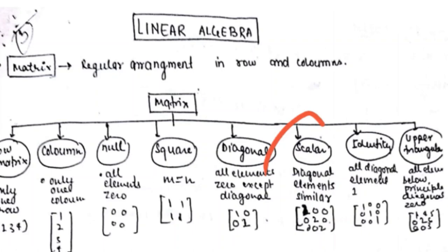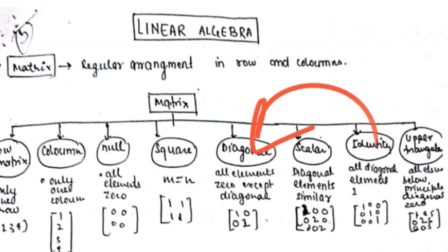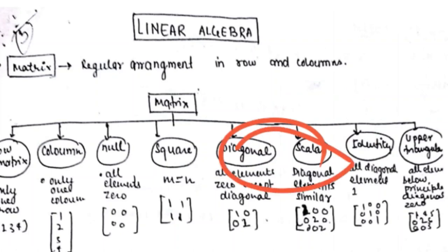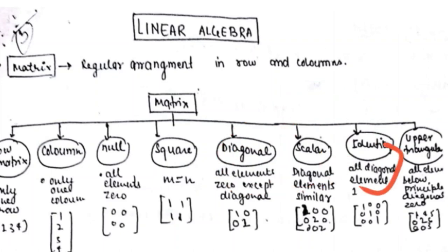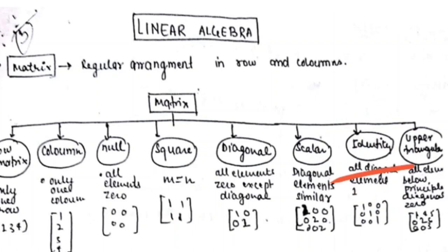An identity matrix is another modification of the diagonal matrix in which all the diagonal elements are one. The difference between a diagonal matrix and an identity matrix is that in the identity matrix, all diagonal elements will be exactly one.